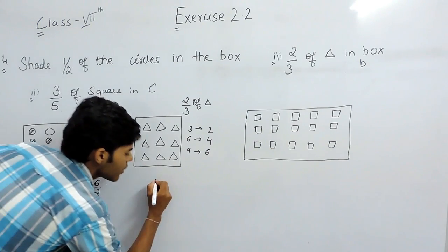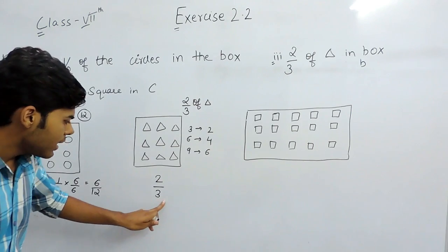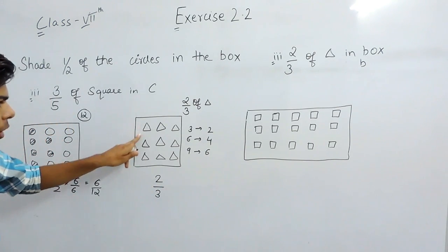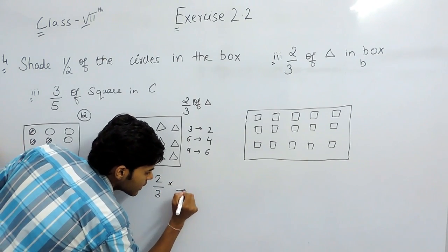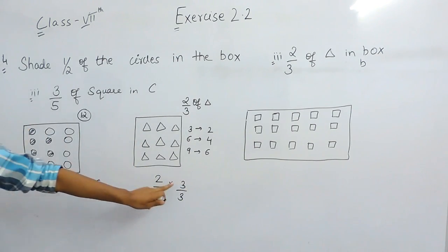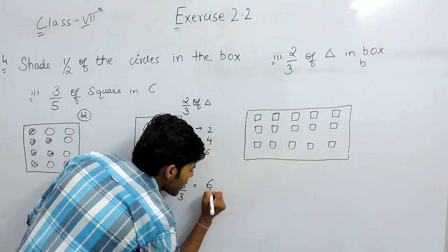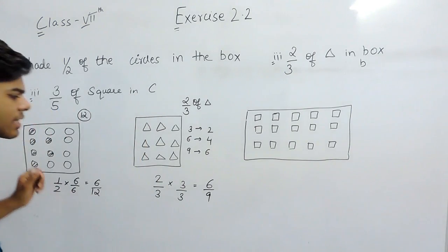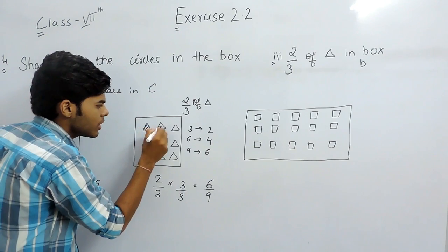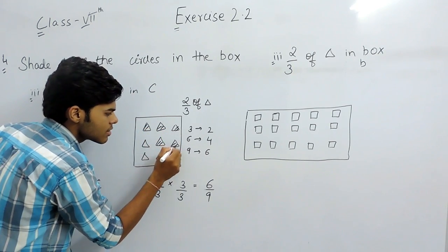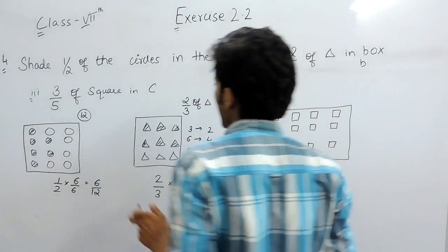The simplest way is to write 2 upon 3 and make the denominator equal to the total number of triangles, which is 9. Multiplying and dividing by 3 gives us 6 by 9. This means that out of total 9 triangles we have to shade any 6. So we will shade any 6 triangles. This is the answer of part B.